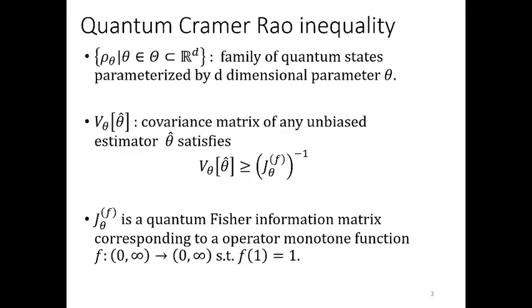Let rho θ be a family of quantum state parameterized by d-dimensional parameters θ. A covariance matrix of any unbiased estimator θ satisfies quantum Cramér-Rao inequality like this, where Jf is a quantum Fisher information matrix corresponding to an operator monotone function f.